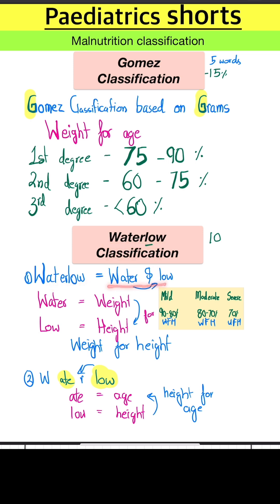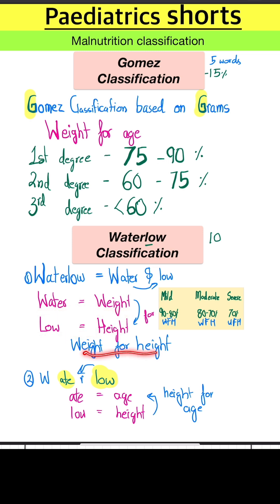Water and low — two words. Water is for weight, low is for height. So it gives us weight for height.